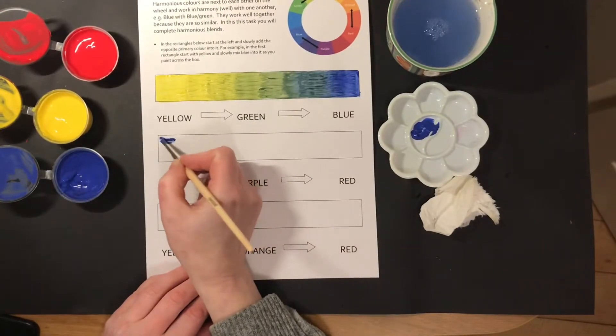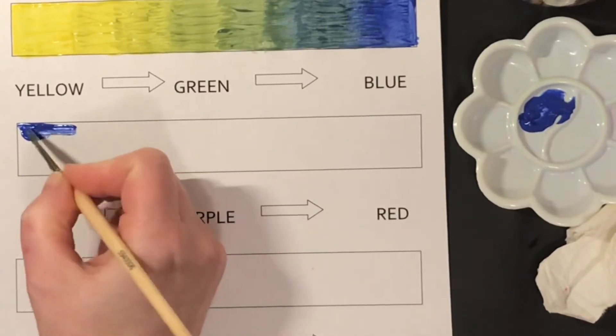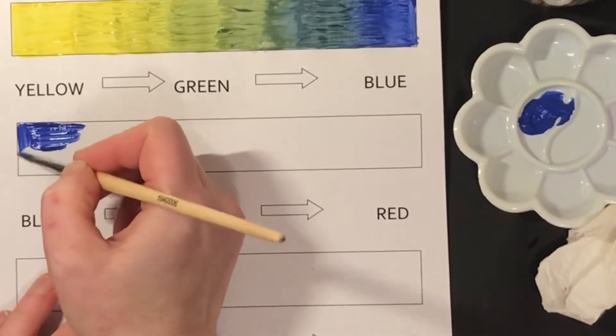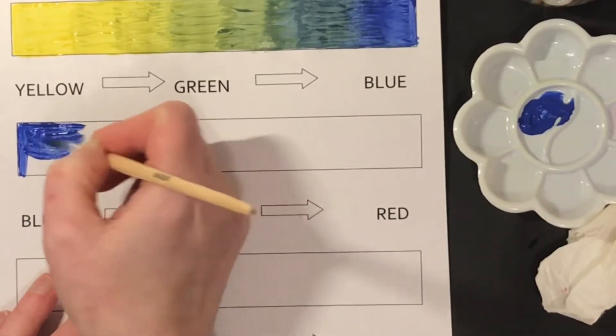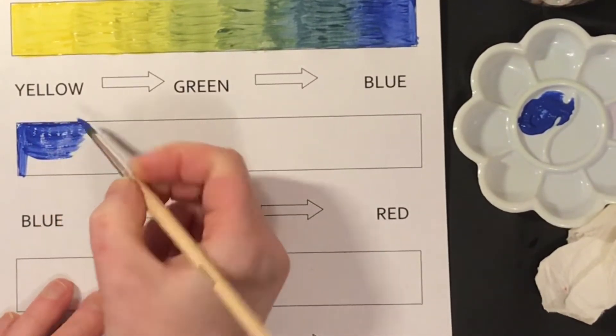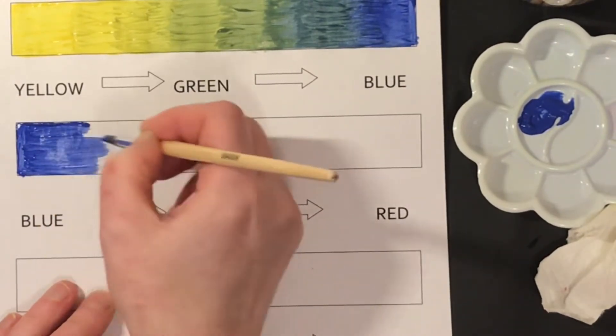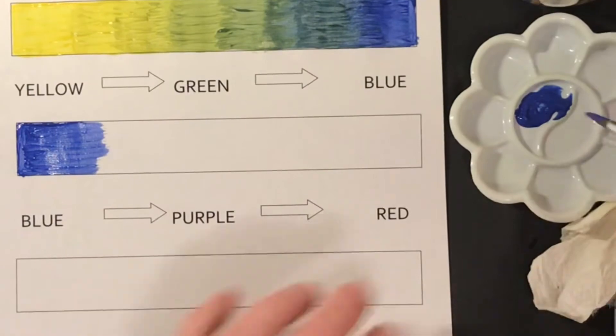The next harmonious blend I'm going to create is blue through blue-purple through purple through red-purple and then through red. Blue and red are similar in intensity, but I would just say that the blue is just not quite as intense as the red. That's why I'm starting with the blue.